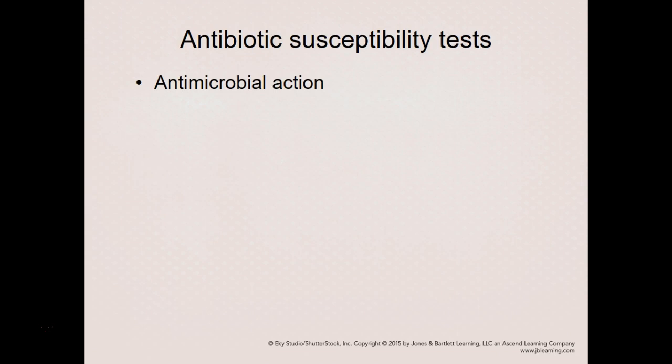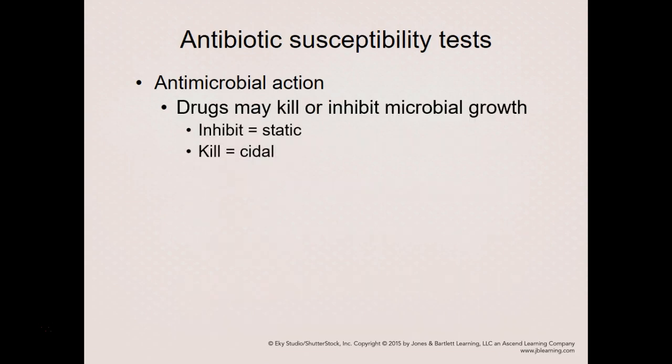There are different tests to identify how effective an antibiotic is. Antibiotics can be inhibiting — bacteriostatic or fungistatic — meaning they stop replication and let the immune system finish the job, or they can be cidal — bactericidal or fungicidal — meaning they actually kill the pathogen. We can test different concentrations of an antibiotic to determine the minimal inhibitory concentration needed to stop growth and the minimal lethal concentration needed to kill the pathogen.